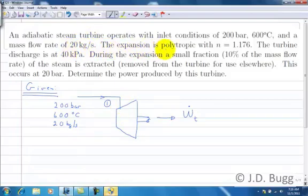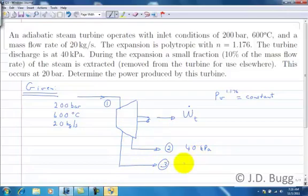Continue on through the problem statement. The expansion is polytropic with N equals 1.176. So this tells us that during this expansion, PV to the N is a constant where N is 1.176. That's probably going to be important to relate properties at one state point to another. Next, it says the turbine discharges at 40 kPa. So the turbine discharge will show over here, state point 2 at 40 kilopascals. Notice we only know one property there, so we're going to have to get another property before we can fix that state. The problem then goes on to say that during the expansion, 10% of the mass flow of the steam is extracted. We'll show that here, call that state point 3, and note that its pressure is 20 bar.